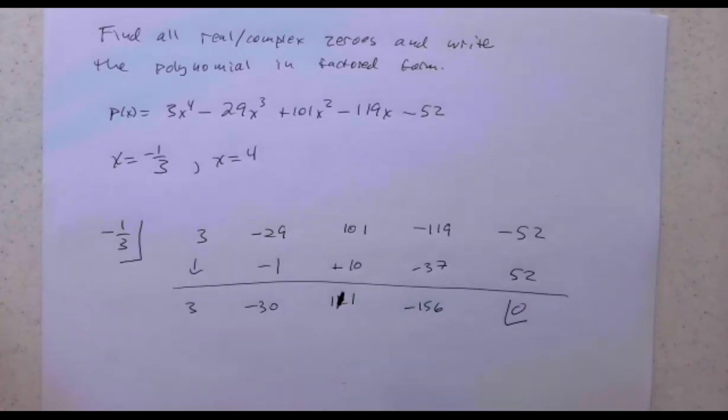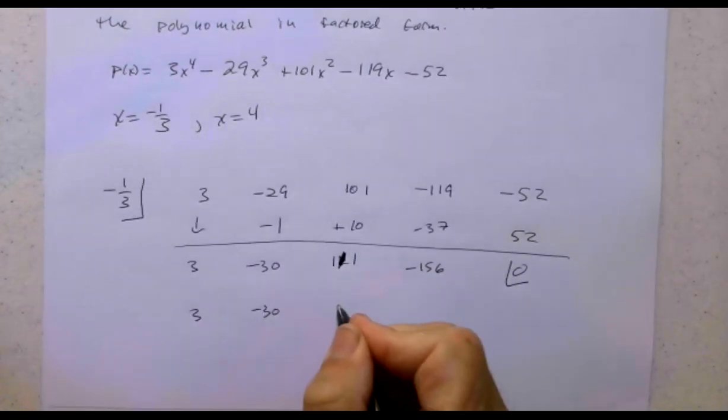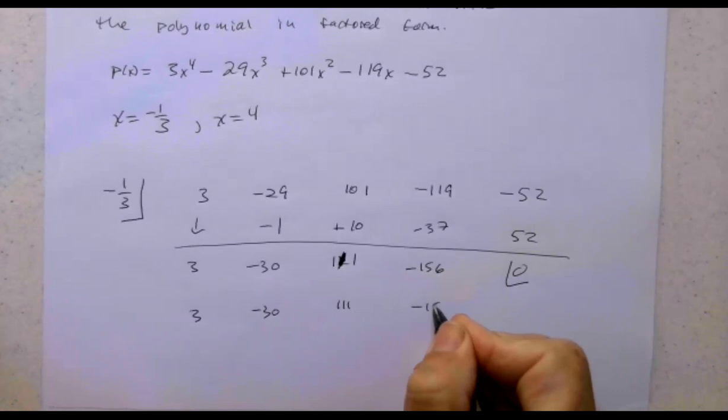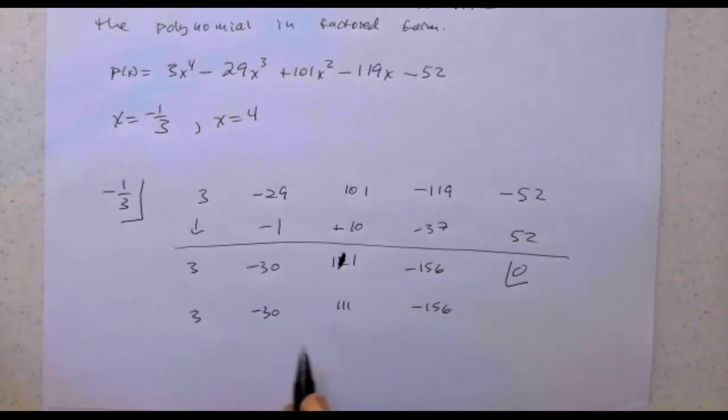Now I'm going to check four as well. So now I have 3, -30, 111, -156. This now becomes 3x^3 - 30x^2 + 111x - 156. I believe four is a zero of this based on the work I did with the graphing calculator.